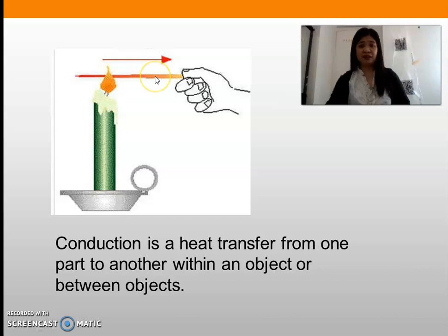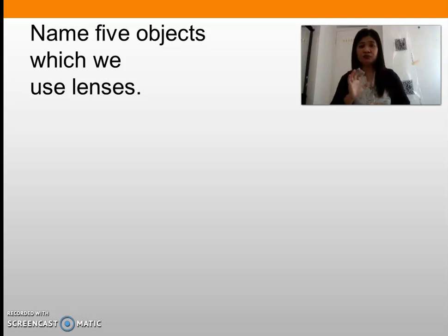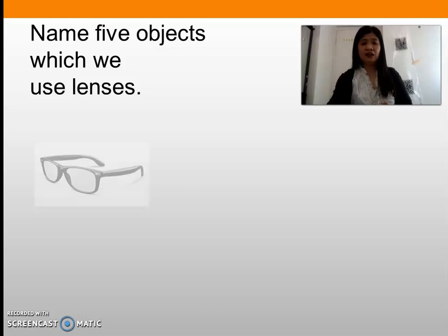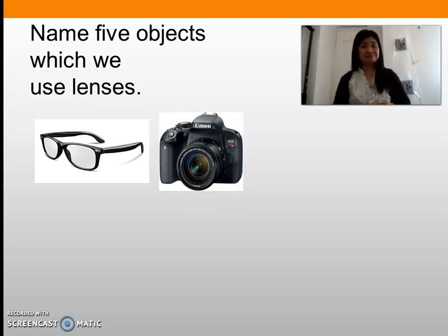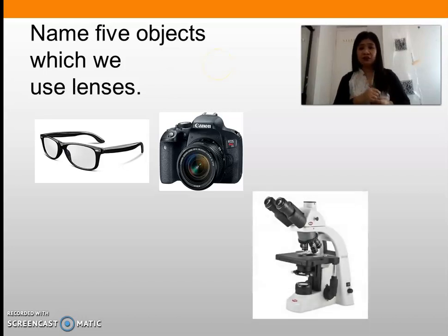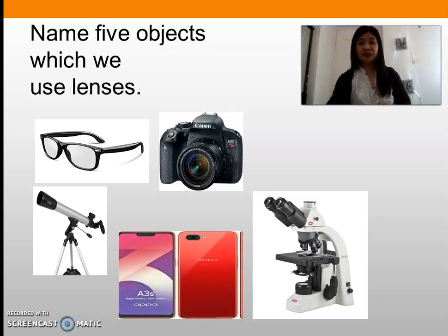Next, can you name five objects in which we use lenses? Please write them down in your notebook. These are the most popular objects that use lenses: the first one is spectacles, we also have a camera, we use lenses in a microscope, a telescope, and also in handphones.